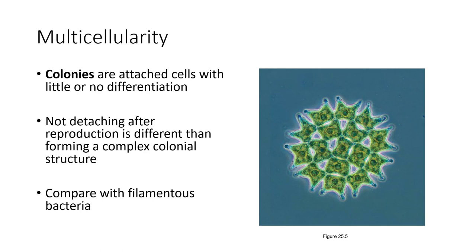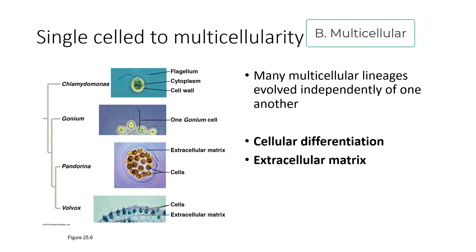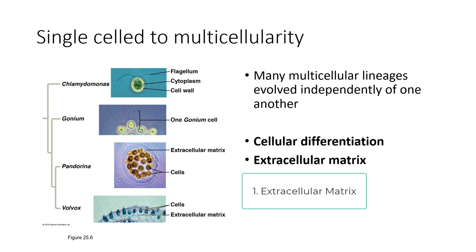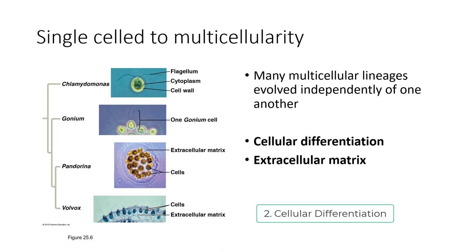Here we have colonial algae where they have reproduced but not detached. Filamentous bacteria are pretty similar to forming colonies. We see colonies in both eukaryotes and prokaryotes. Real multicellularity involves more differentiation. Chlamydomonas is single-celled; Gonium and Pandorina are colonial, but Pandorina has an extracellular matrix — cells are held together by a matrix secreted by the cells. There is also cellular differentiation: not all cells swim around; some focus on secreting extracellular matrix, some on reproduction. That cellular differentiation is necessary for a true multicellular organism.